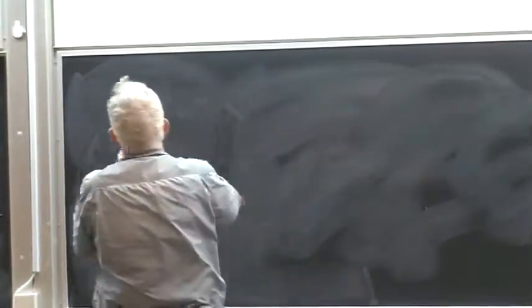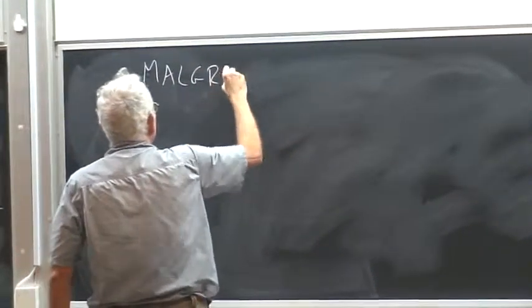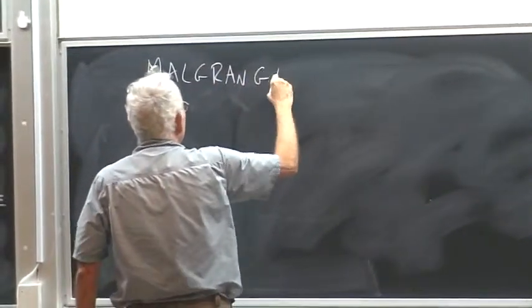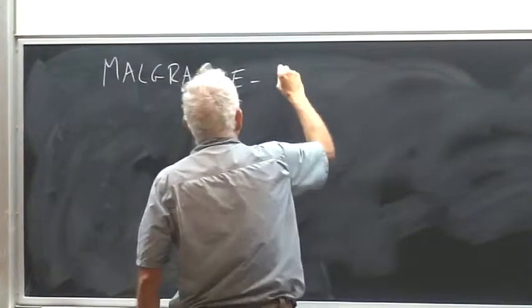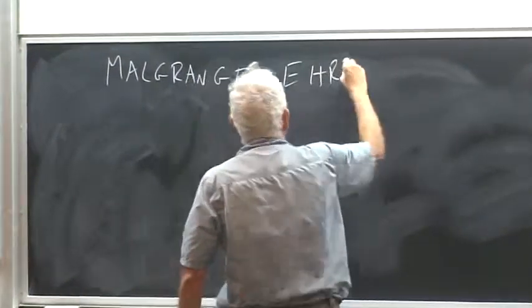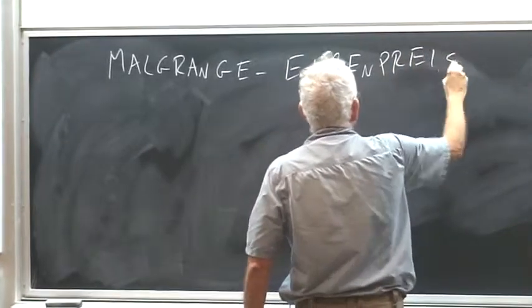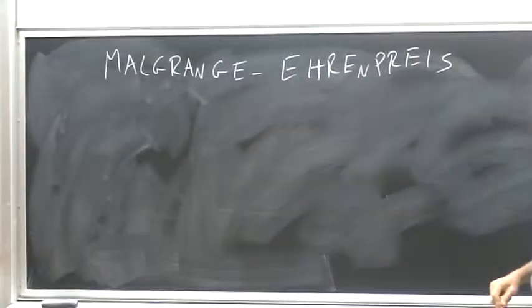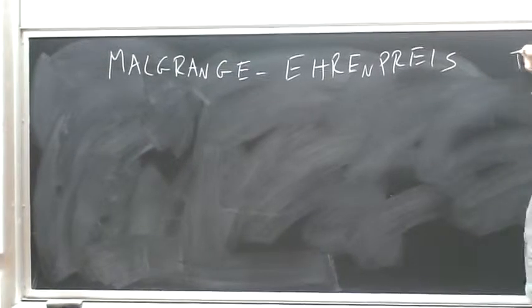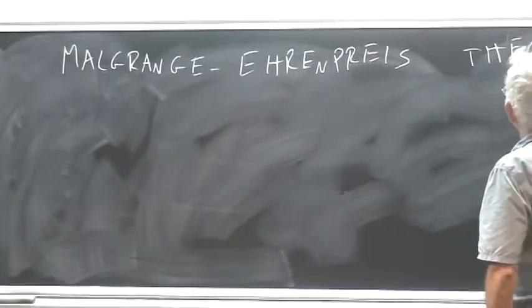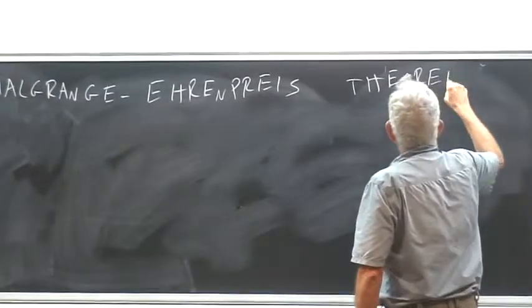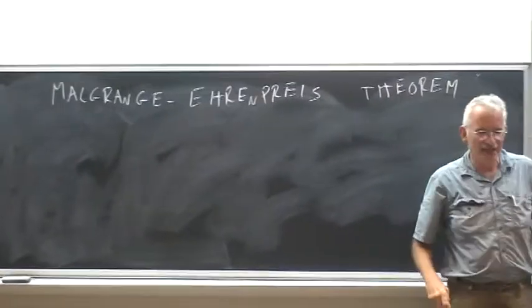And what made him famous and got him to be a star in PDE was the Malgrange-Ehrenpreis theorem. This was the true foundation of his mathematics. It was a big open problem back in the early 1950s.